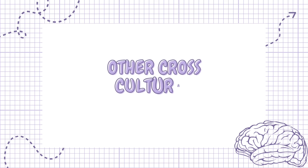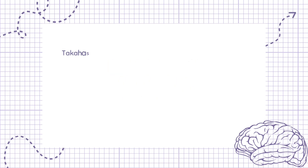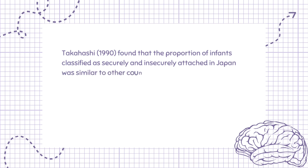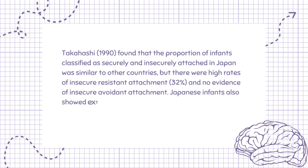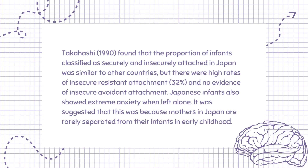There is other cross-cultural research. Takahashi (1990) found that the proportion of infants classified as securely and insecurely attached in Japan was similar to other countries, but there were high rates of insecure-resistant attachment (32%) and no evidence of insecure-avoidant attachment. Japanese infants also showed extreme anxiety when left alone. It was suggested this was because mothers in Japan are rarely separated from their infants in early childhood.